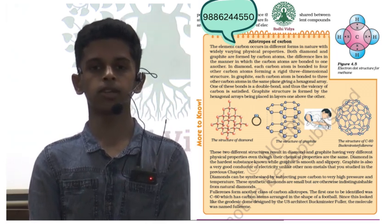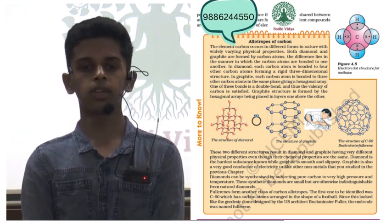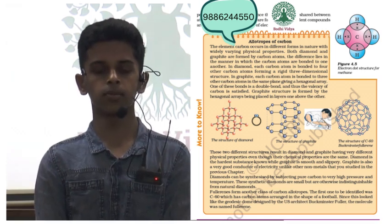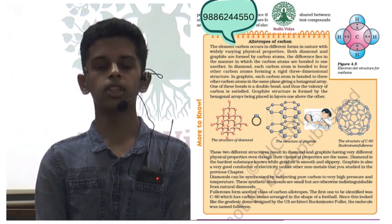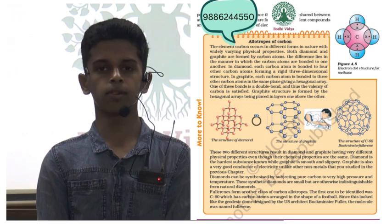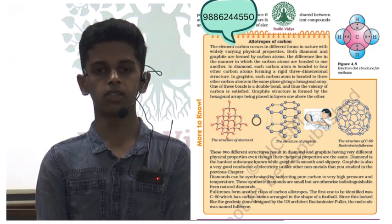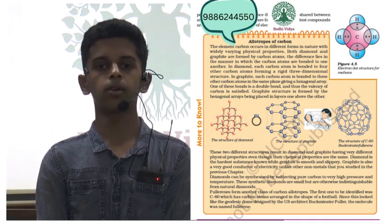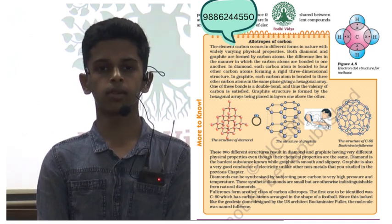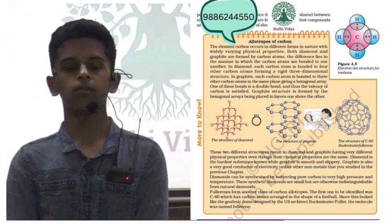The fullerene molecule forms another class in the carbon allotropes. This molecule resembles the shape of a football and the geodesic dome made by US architect Buckminster Fuller, giving it the name fullerene.